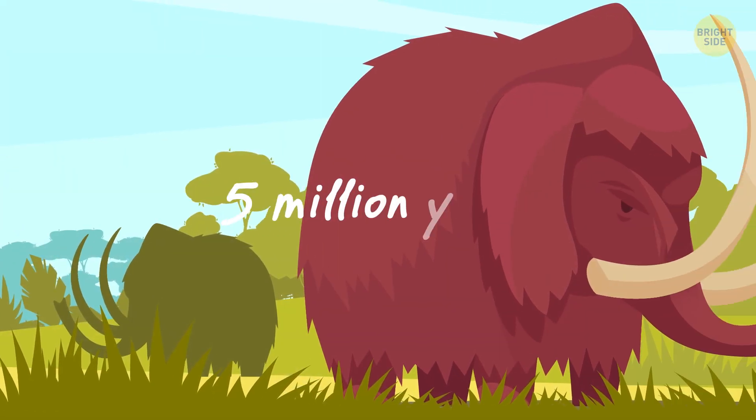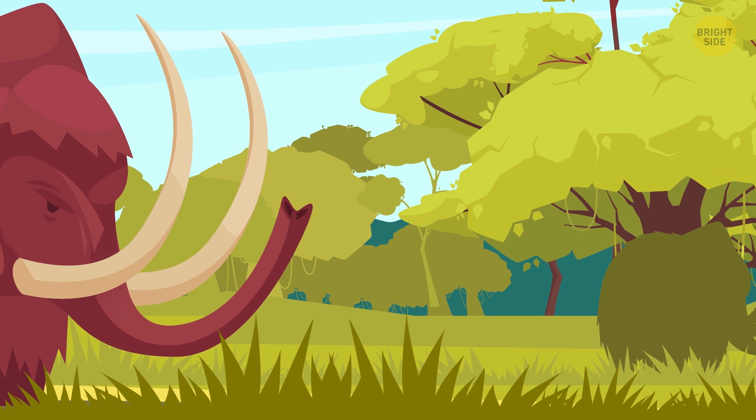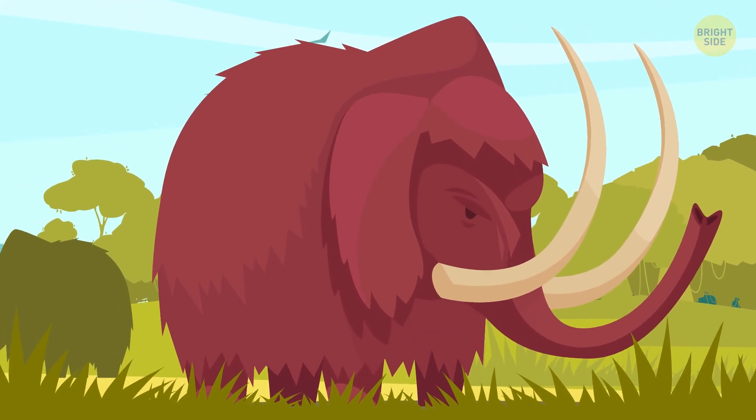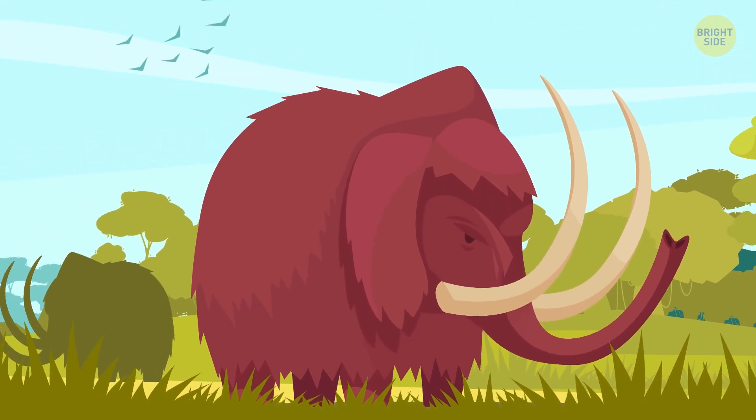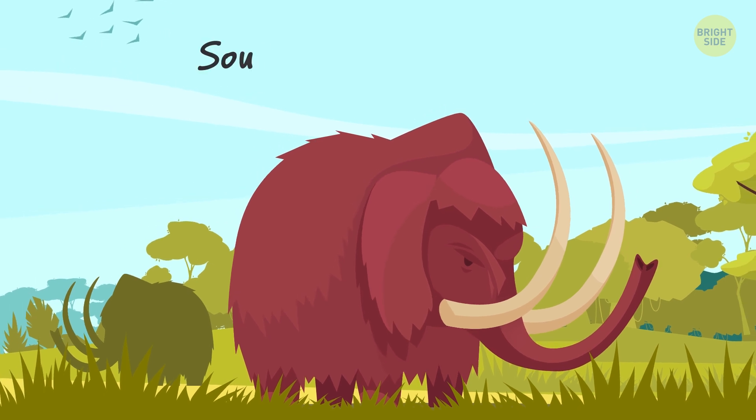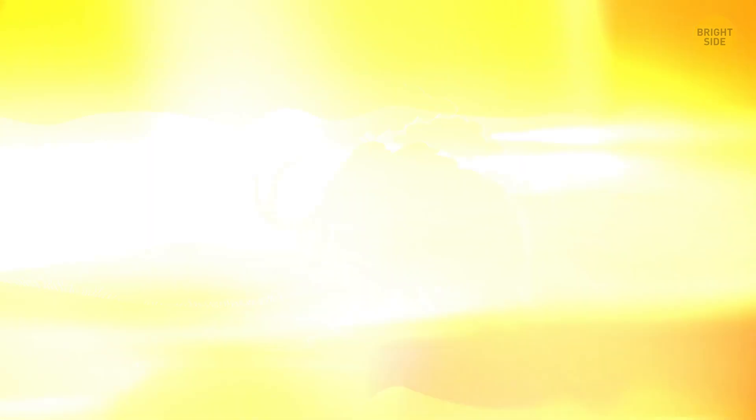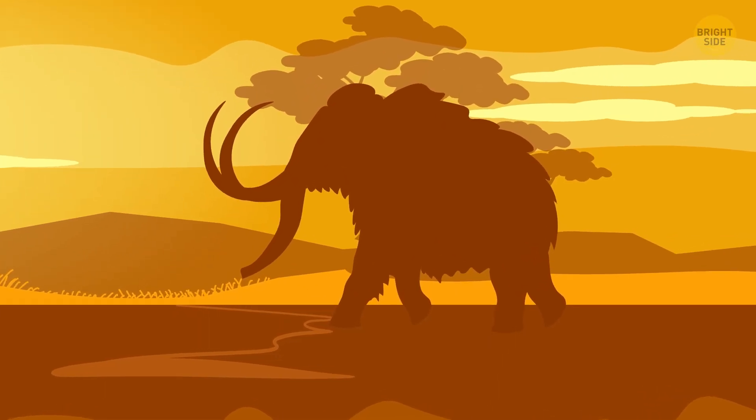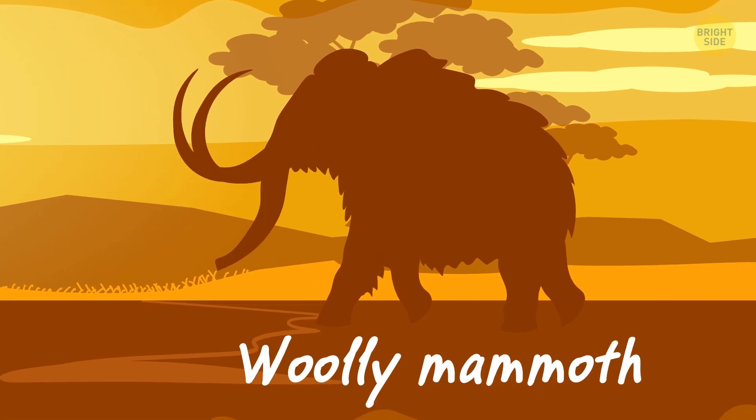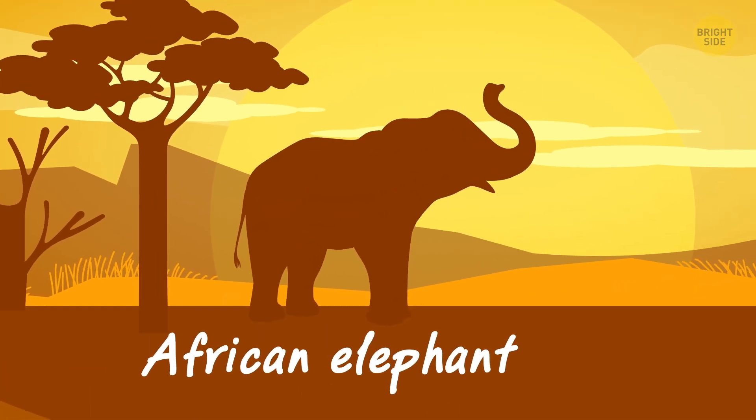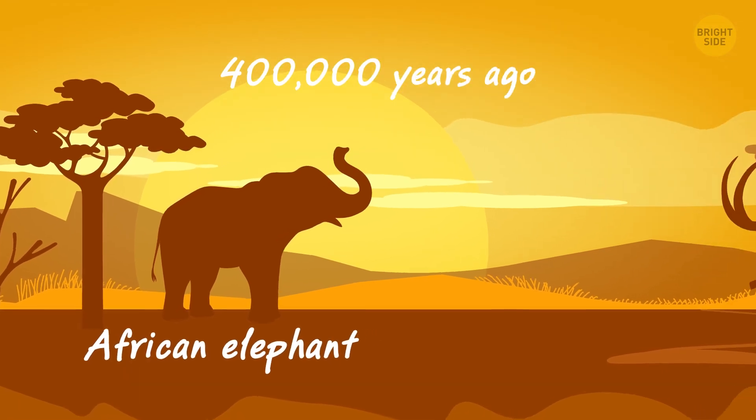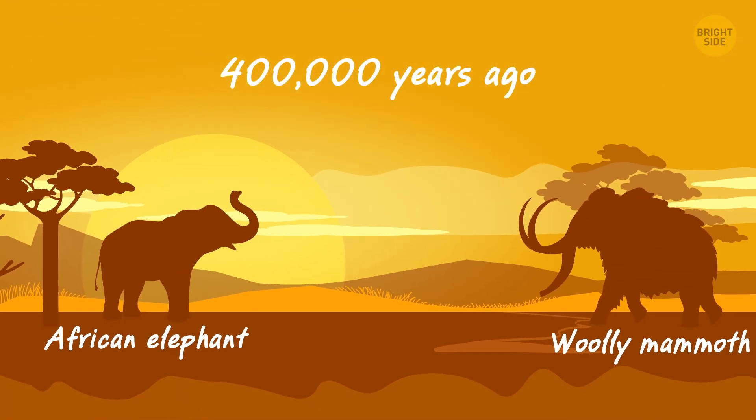He lands about 5 million years into the past. And just look at that! A fluffy elephant! That's the first mammoth ever, the South African mammoth. By the way, the last mammoth species to appear was the woolly mammoth. The size of the modern African elephant, it developed around 400,000 years ago in East Asia.